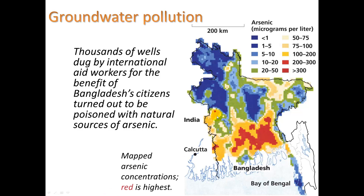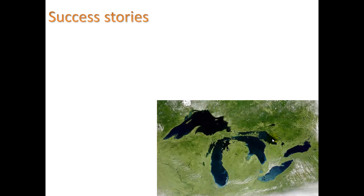As an example, in Bangladesh in the 1990s, thousands of wells dug by international aid workers were found to be tainted with natural sources of arsenic. This illustrates that contaminants can be natural, and we need systems to monitor, look for, and be aware of them.